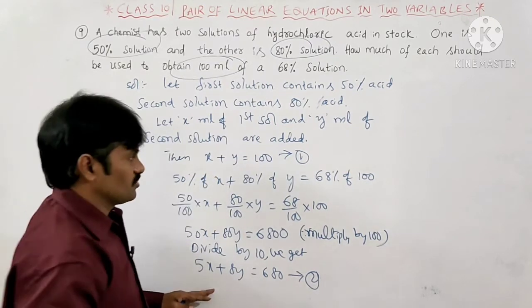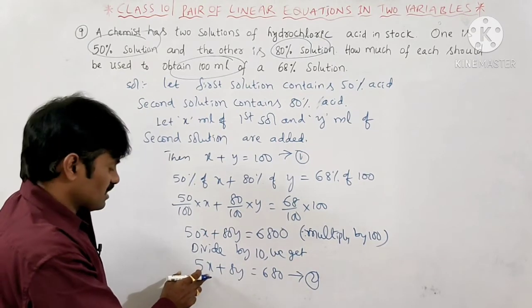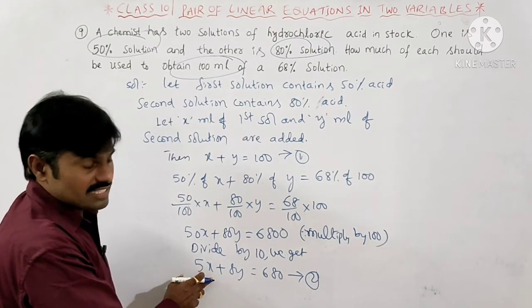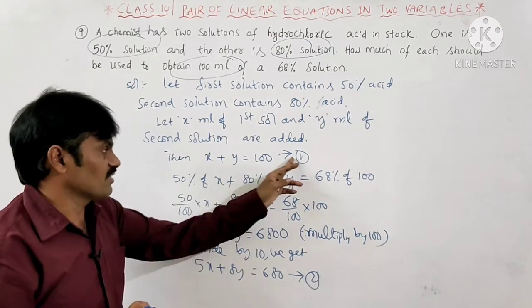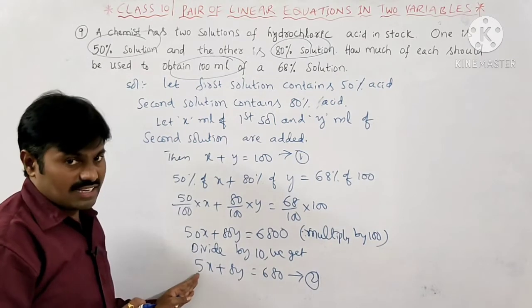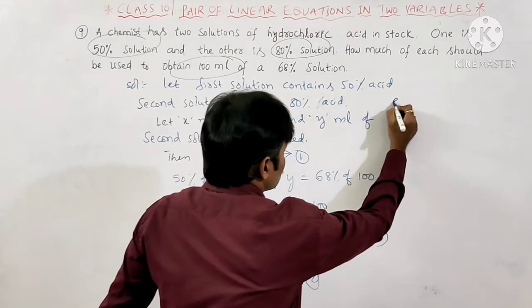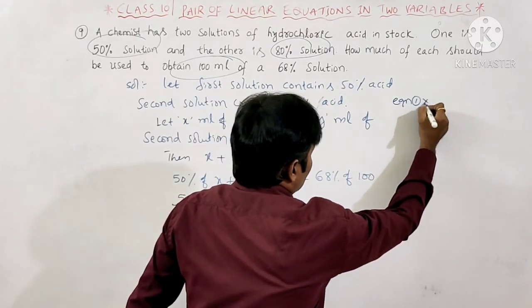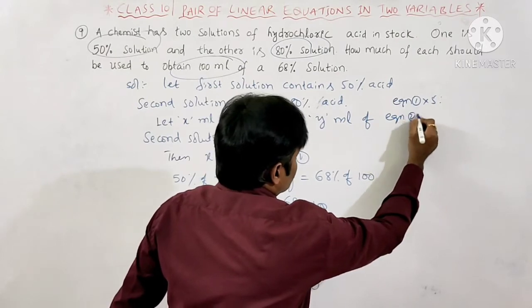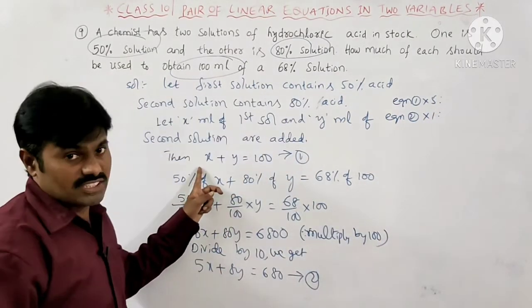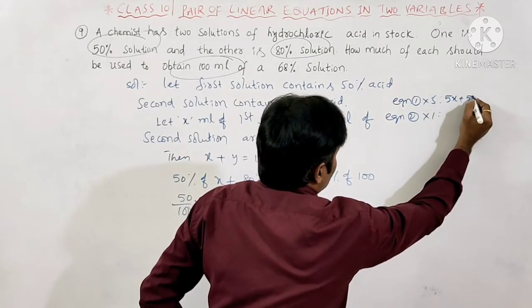Multiplying equation 1 by 5 and equation 2 by 1 — since the LCM of the coefficients of X is 5 and equation 2 already has coefficient 5, there is no change in equation 2. So equation 1 becomes 5X plus 5Y equals 500, and equation 2 remains 5X plus 8Y equals 680.